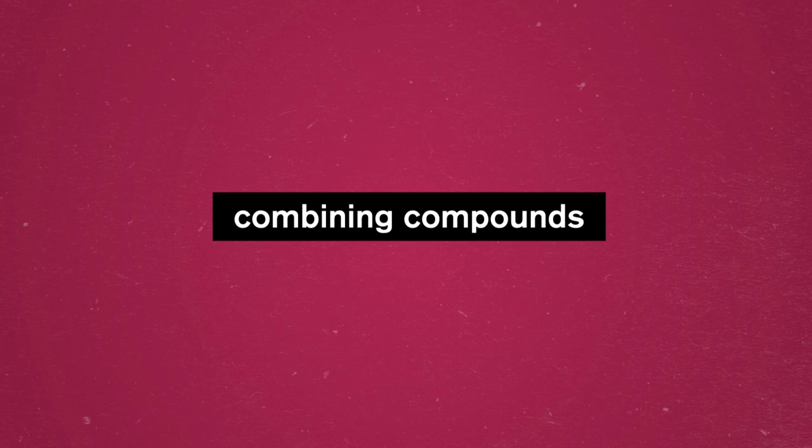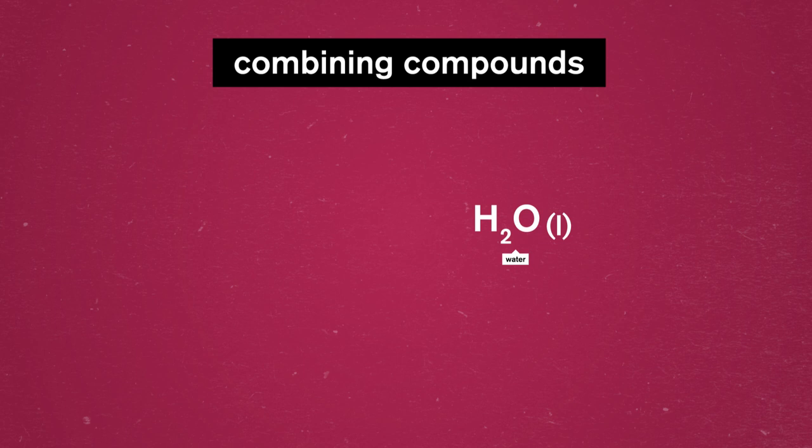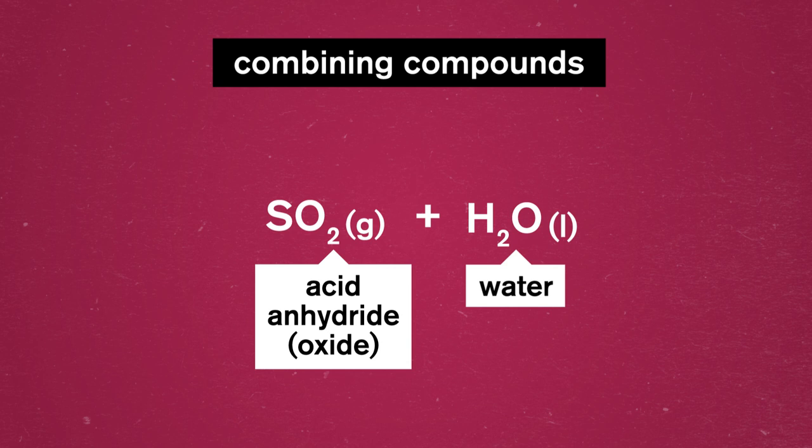Next, we can talk about combining compounds. The common ones we'll see often have some overlap with acids and bases, but the general format of two substances becoming one remains the same throughout. We might have the combination of water with an acid oxide, also known as an acid anhydride, which is an acidic substance formed by removing water. Think of it as though it's been dried out, like astronaut food or raisins.